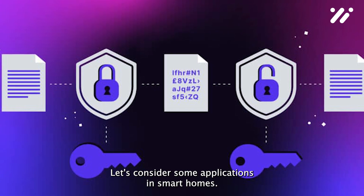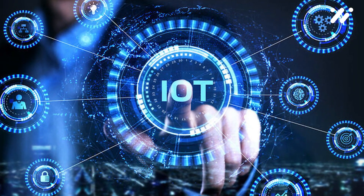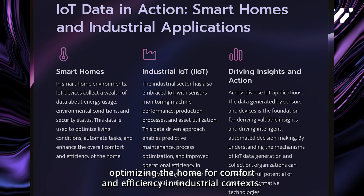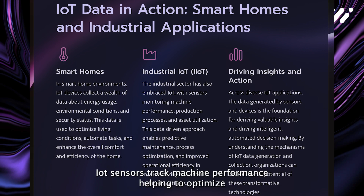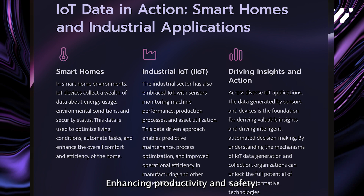Let's consider some applications. In smart homes, IoT devices monitor everything from energy usage to environmental conditions, optimizing the home for comfort and efficiency. In industrial contexts, IoT sensors track machine performance, helping to optimize processes and predict when maintenance is needed, enhancing productivity and safety.